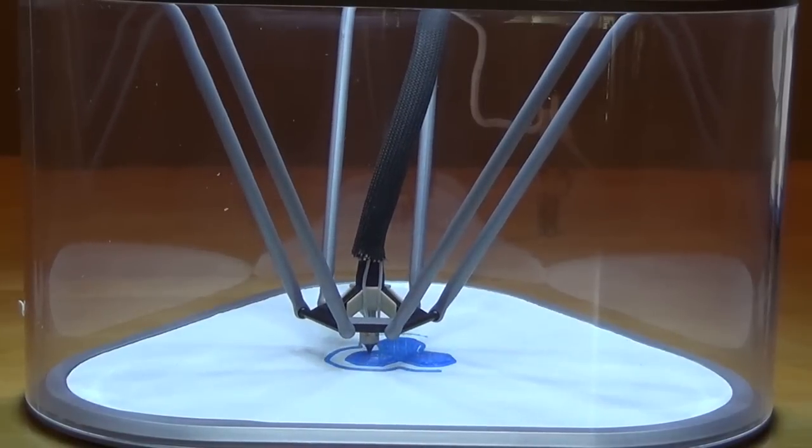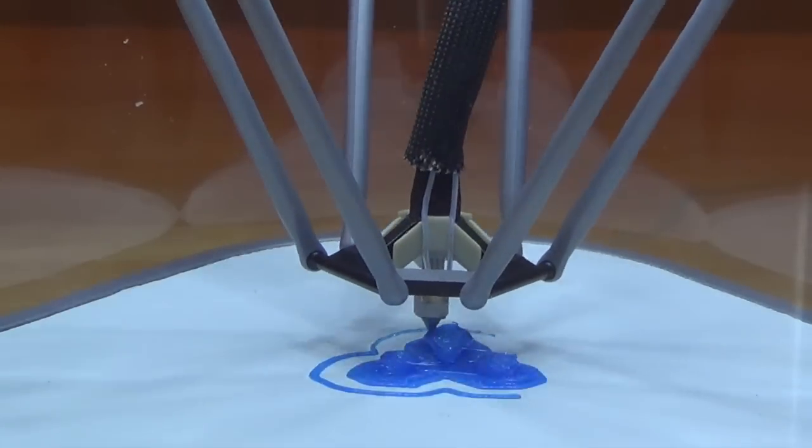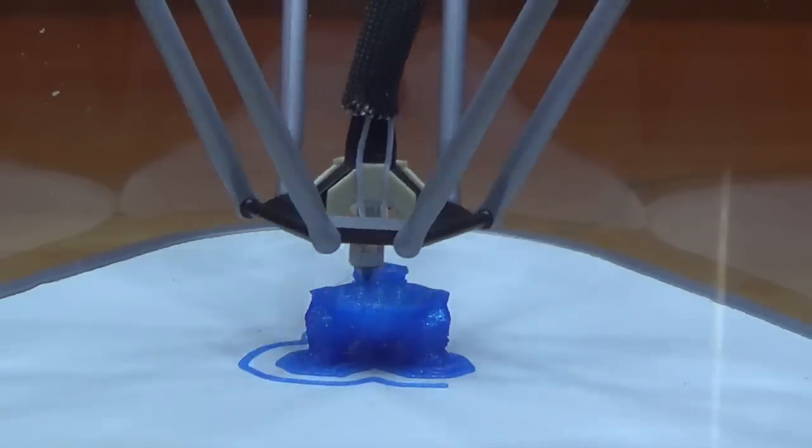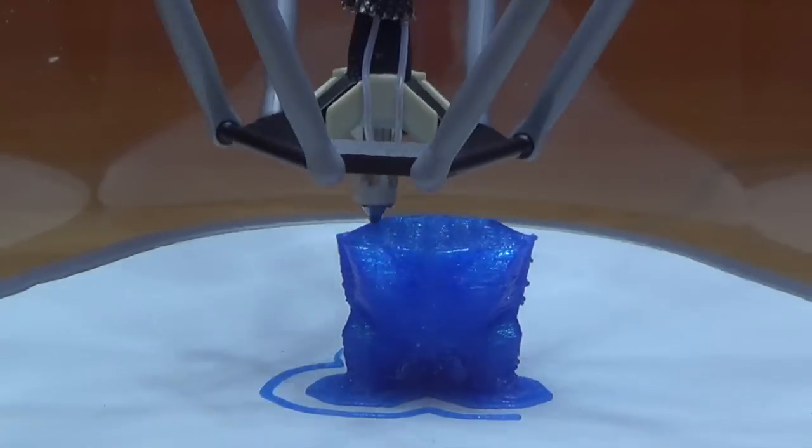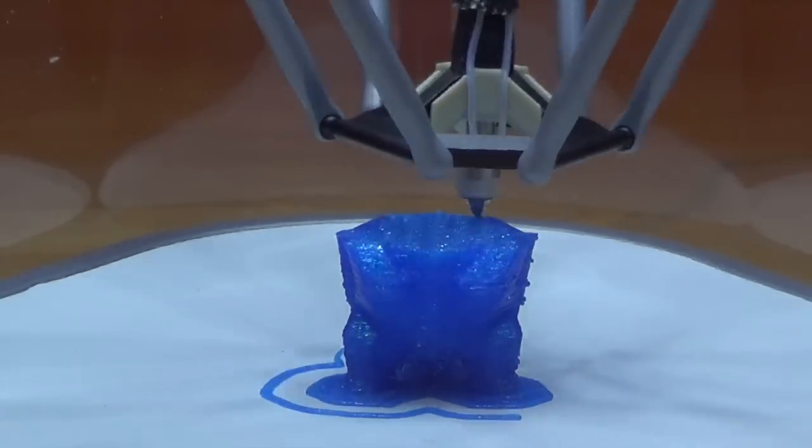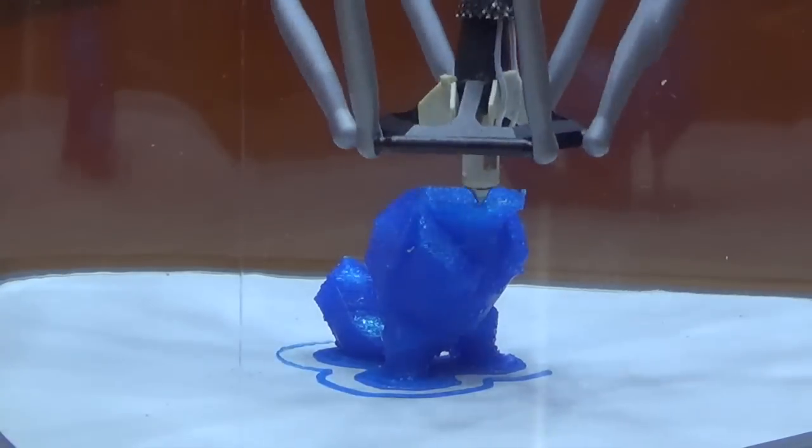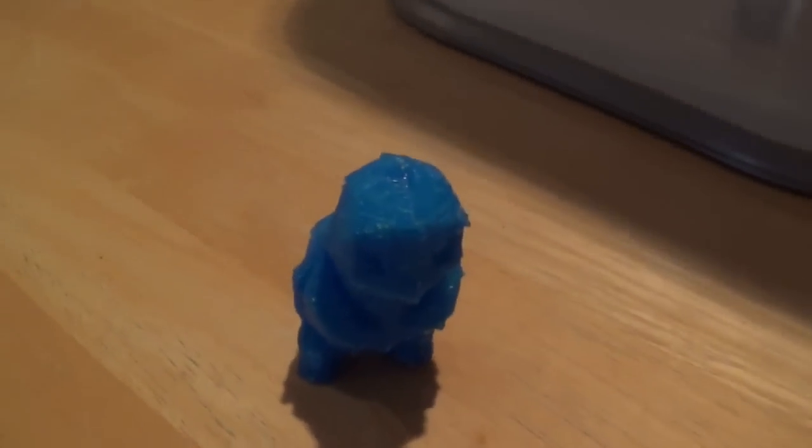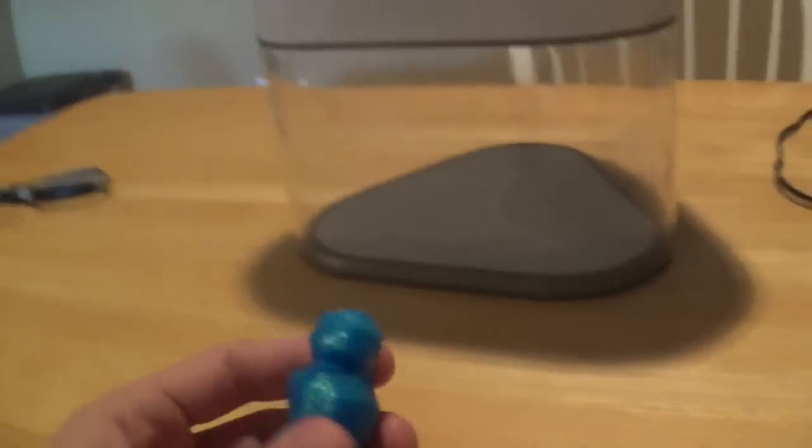So this will be that 25 percent infill. Here's the finished piece, this is the Squirtle STL file printed on the TECO printer. It is a little bit rough, but I mean for a small compact $200 printer it's not too shabby.